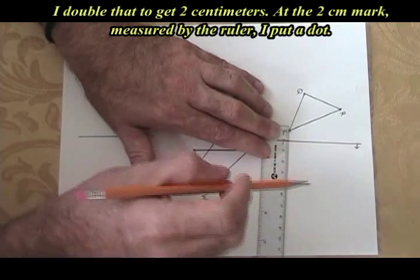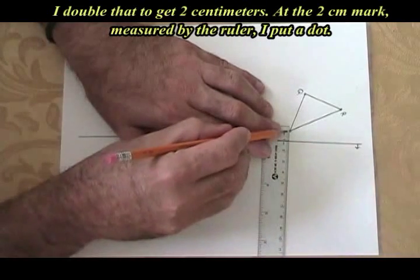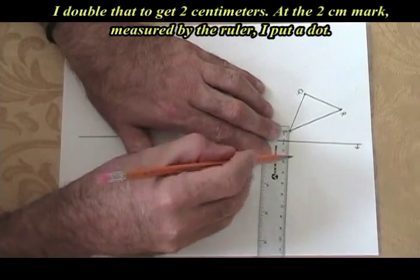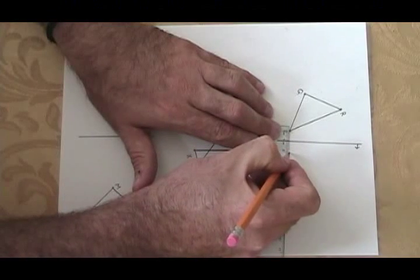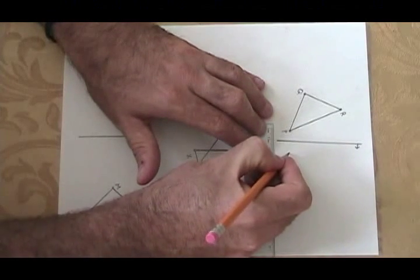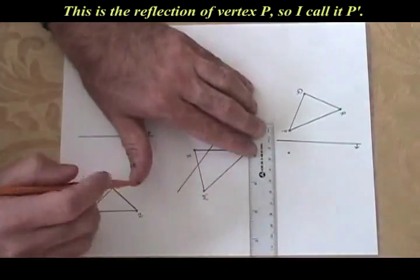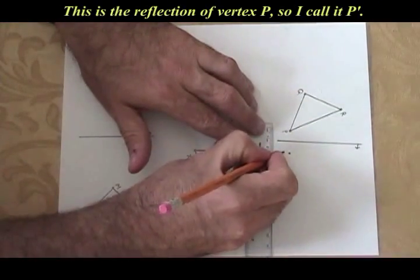I double that. One times two is two. So starting from zero, I count to two centimeters and I put a dot. This is the reflection of vertex P and I'll call it P'.